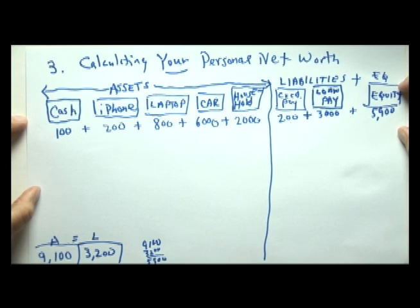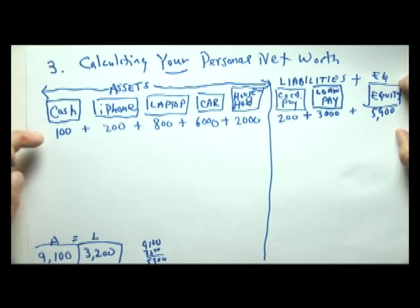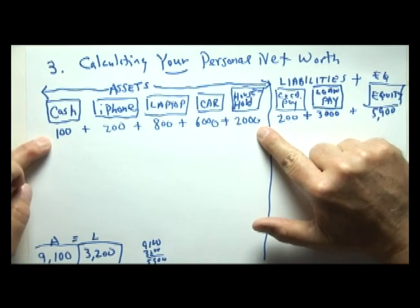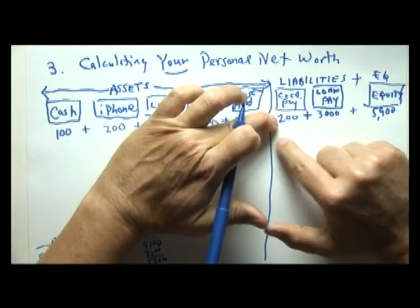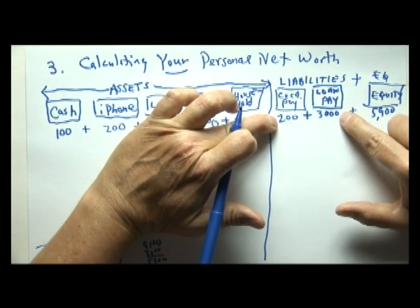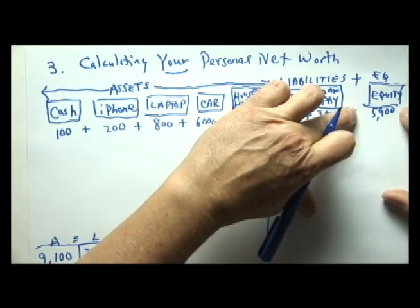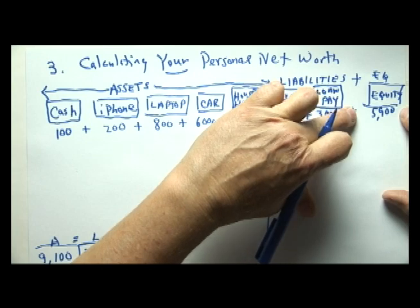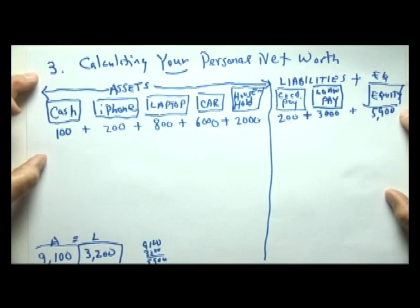What we've done in this lesson is taken an individual — a student — and calculated his or her net worth, or equity, by adding up all the things owned, subtracting all debts owed, and the difference is the personal net worth of that individual student. This ends lesson three: calculating your personal net worth.